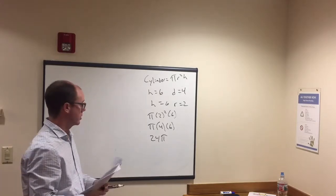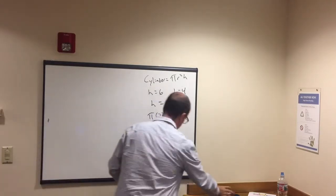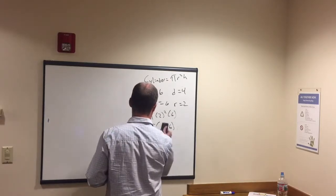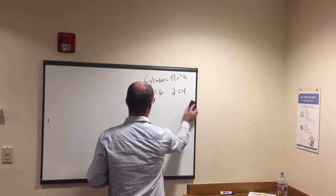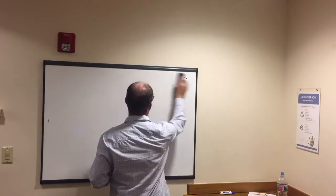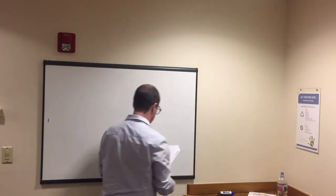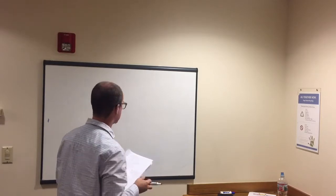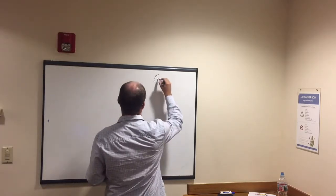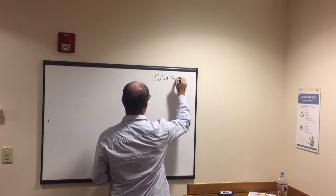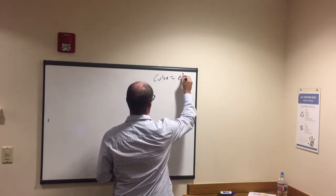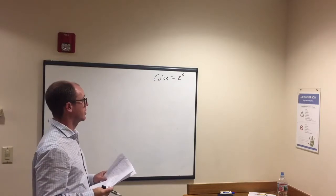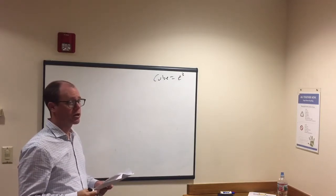Okay, so that's a look at volume of cylinders, and one more one that comes up a lot, cube. Again, this is volume, right? So cube equals the length of the edge to the third power.